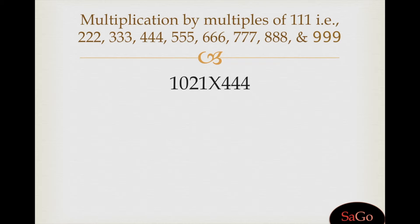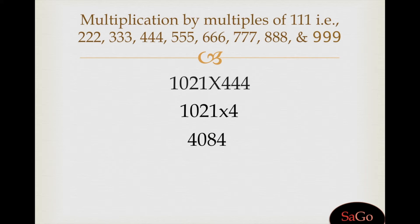Let's take one more example: 1021 multiplied by triple 4. We will multiply 1021 by 4, because triple 4 is a multiple of triple 1. When we multiply we get 4084. Put two zeros on both ends to get 00 4084 00. Now add these digits in pairs of 3 digits each.